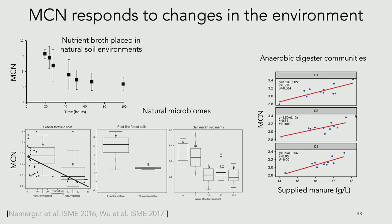Another study with aerobic digester communities showed that when scientists supplied manure, the mean copy number responded predictably: with less nutrients you have more slow-growing species, and as you increase nutrients you get more faster-growing species. This supports using mean copy number as a good community descriptor.